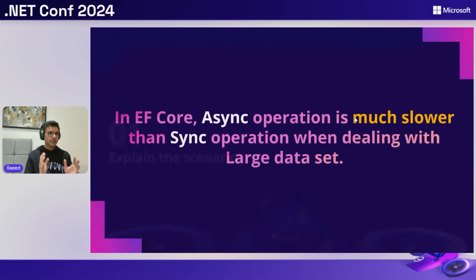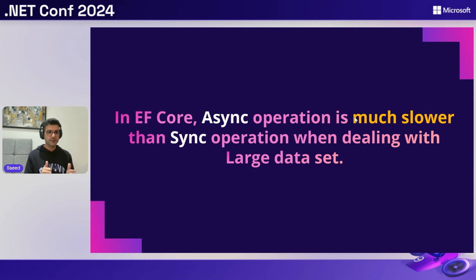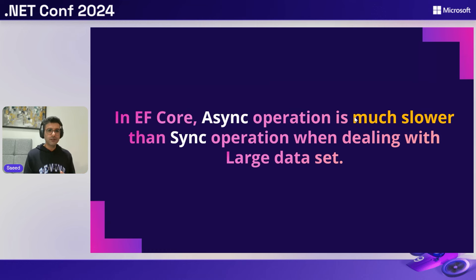Let's go straight to the point. In EF Core, async operations are much slower than sync operations when dealing with large datasets. Everyone says async is best practice and we need to use it everywhere — that's correct, but not always. In scenarios like the ones we're going to discuss, async operation is not that good.